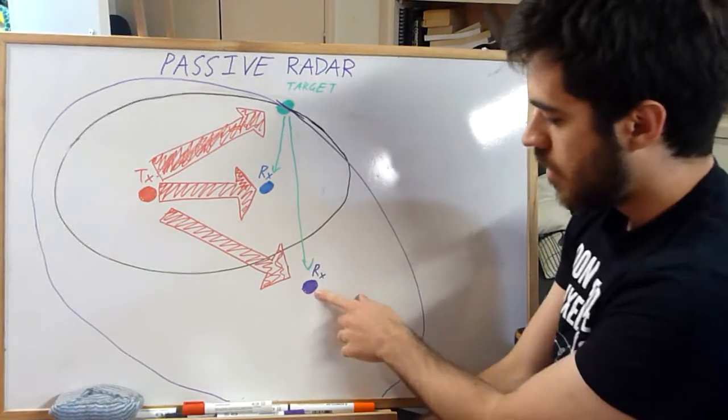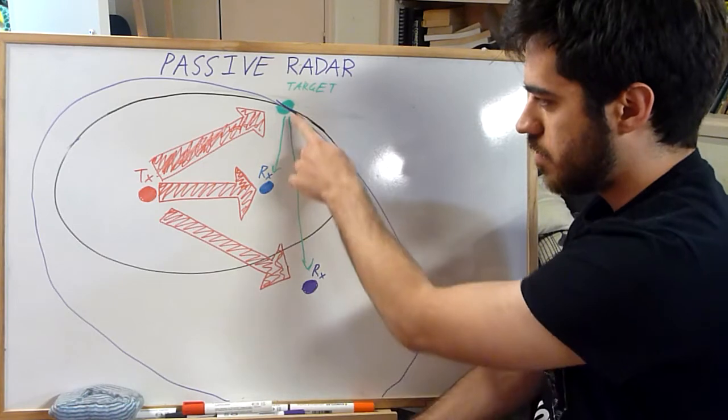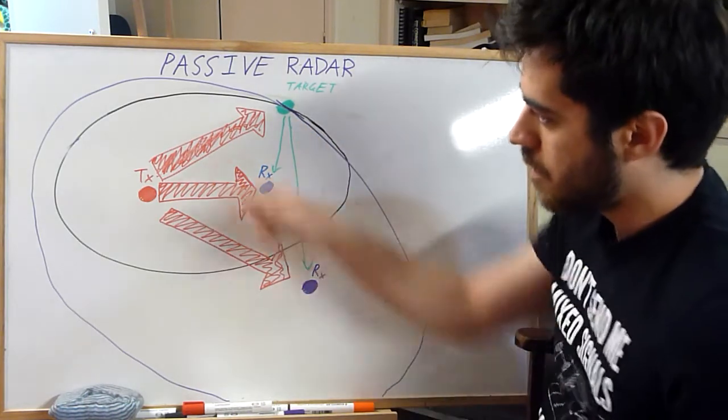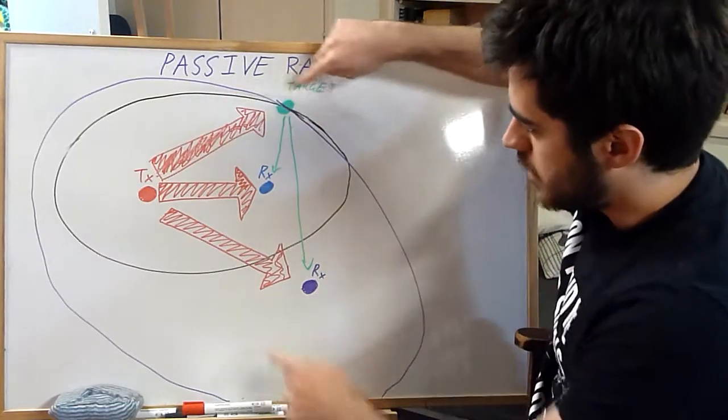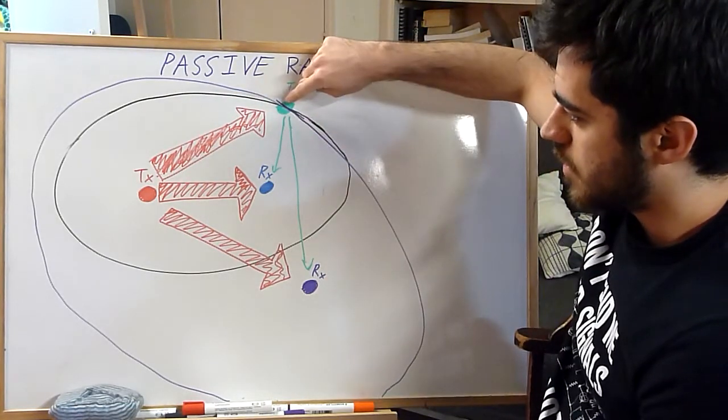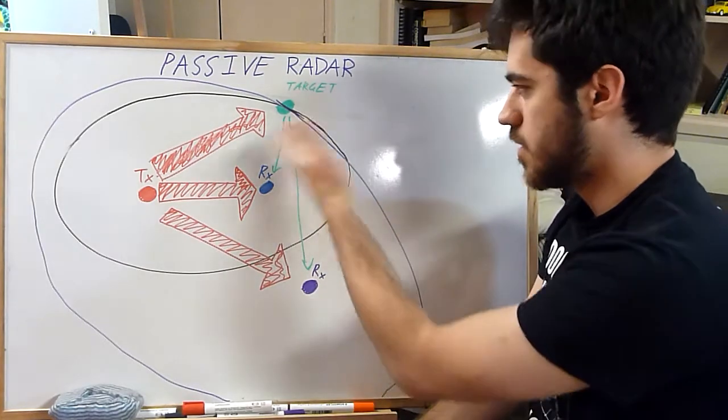So if you look here I've got another receiver and sure it's receiving this direct path signal but it's also getting a reflection from here and it forms its own ellipse with these two being the foci. You can see there are some intercepts here, so that lowers down the possibilities of where it might be.